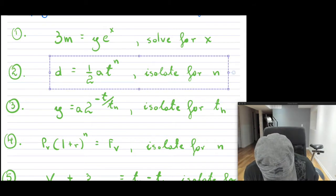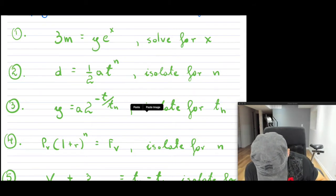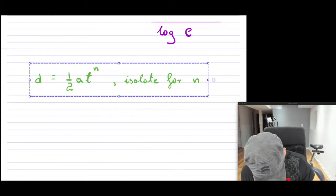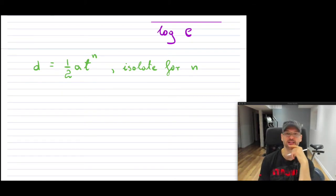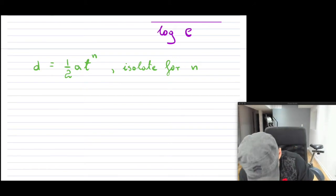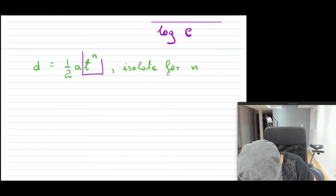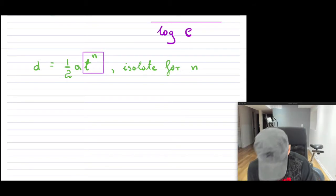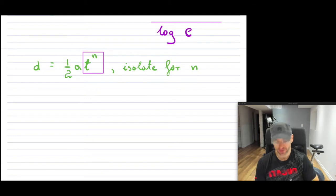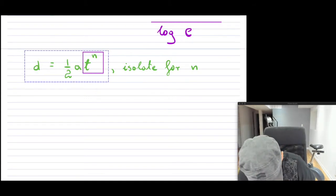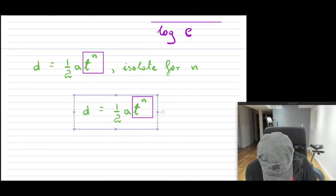Let's take a look at example number two. Here is another example. Now let's go ahead and solve. We want to be able to isolate for n. Your first job is to isolate for the base with the exponent. In this case, here is our base with the exponent — t to the n. Now we want to get rid of everything else. We don't want to have that 1 over 2 and we do not want to have the a, so we're going to be getting rid of that.